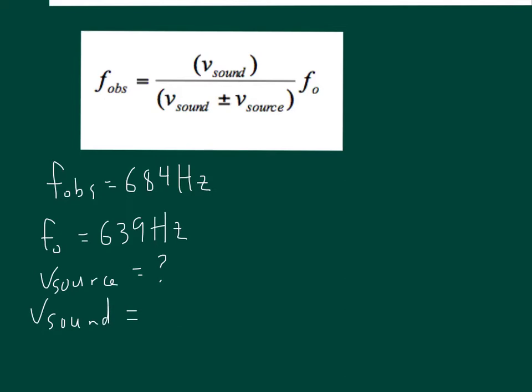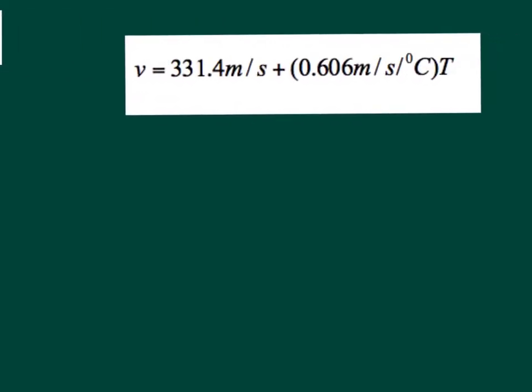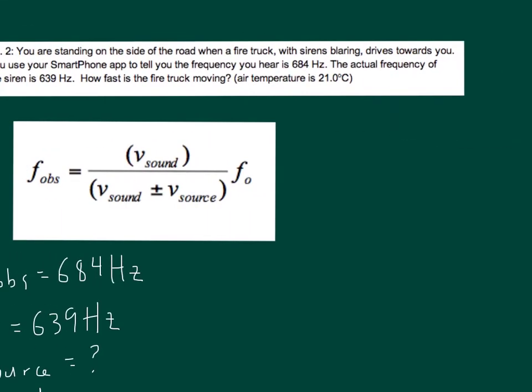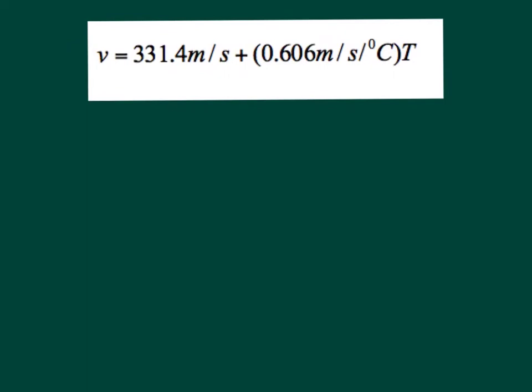Now speed of sound is dependent on air temperature, so we will use this equation right here. We've used this before: 331.4 meters per second plus the temperature correction, 0.606 meters per second for every degree Celsius, and T is our temperature. We go back and double check our temperature was 21 degrees. So we go to the equation and we will now solve for the speed of sound.